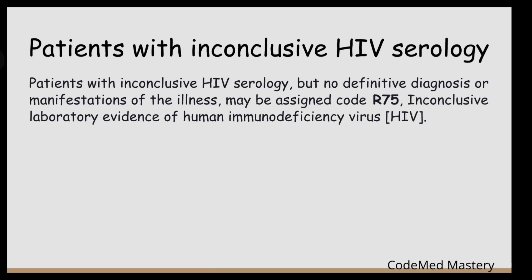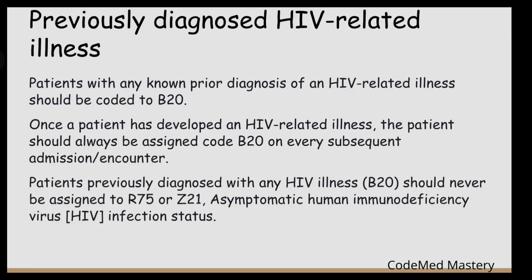The next guideline covers patients with inconclusive HIV serology. Patients with inconclusive HIV serology but no definitive diagnosis or manifestation of the illness may be assigned code R75, which represents inconclusive laboratory evidence of Human Immunodeficiency Virus (HIV).